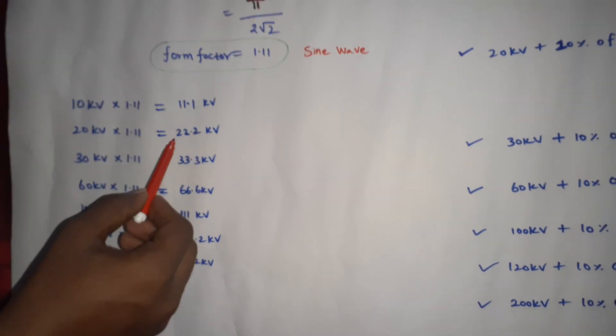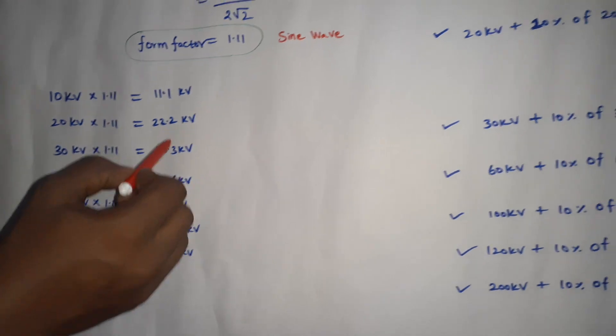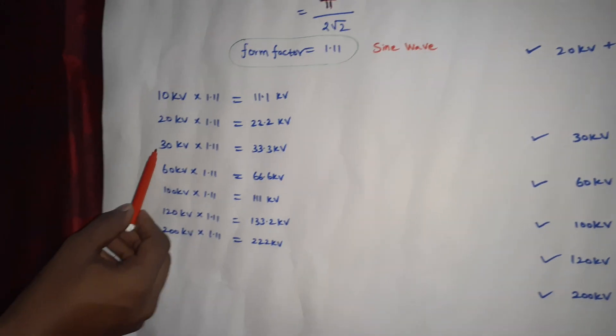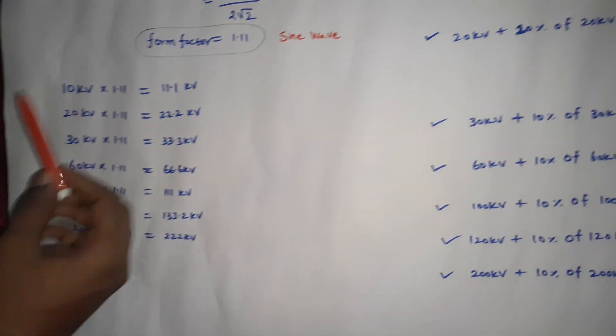Second, 20 KV times 1.11 equals 22.2. We also have 22 KV. So, 30 KV into 1.11 equals 33.33 KV.